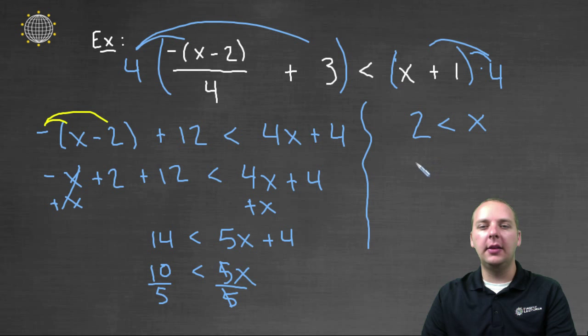which if we wanted to write that in the other direction, we could say x is greater than two. That's the same thing, two being less than x is equivalent to x being greater than two.